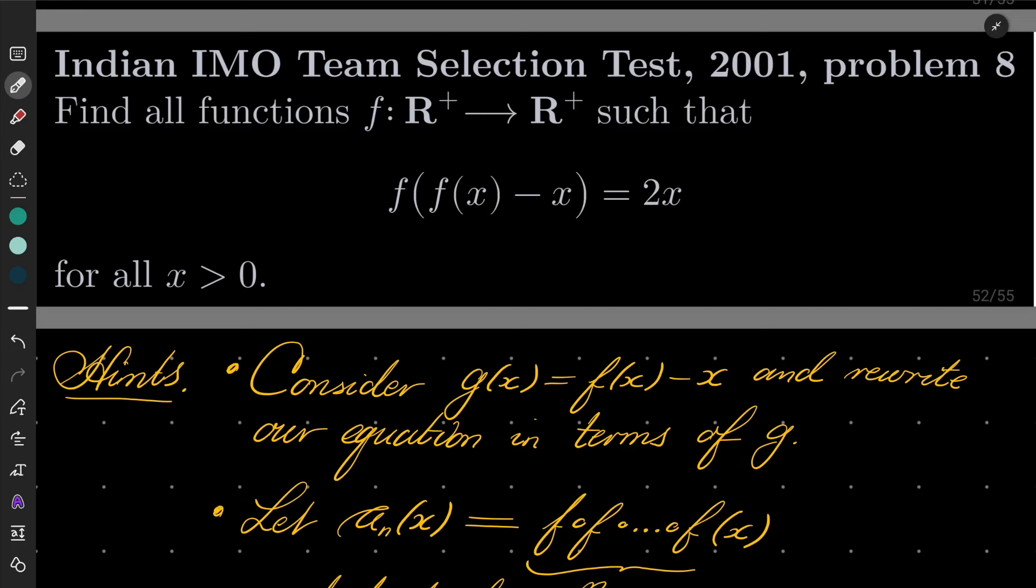We want to find all functions f from the set of positive real numbers into itself such that f(f(x) - x) equals 2x for all positive numbers x.